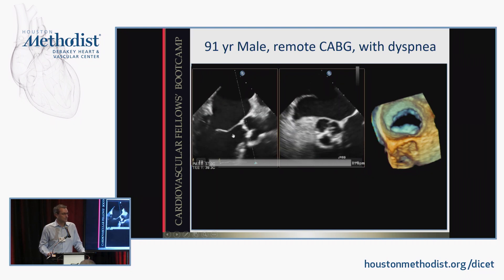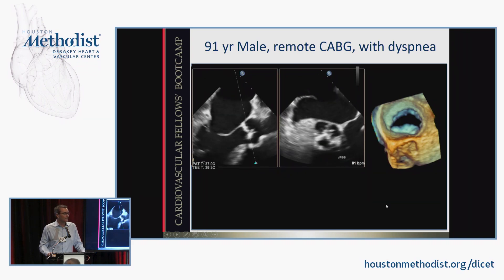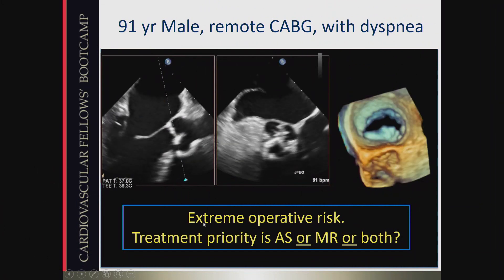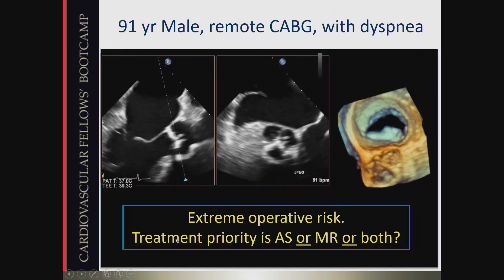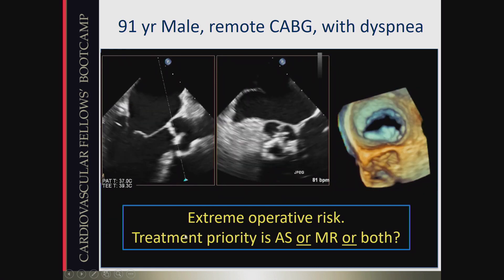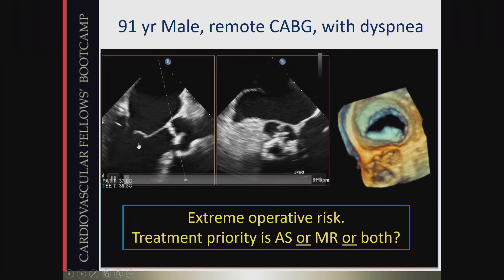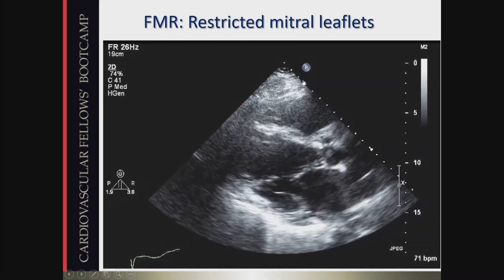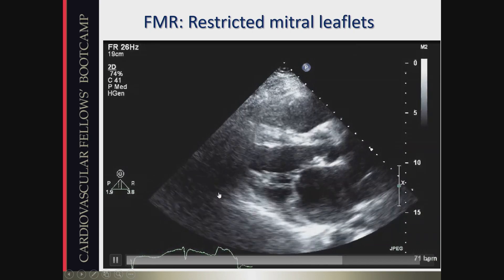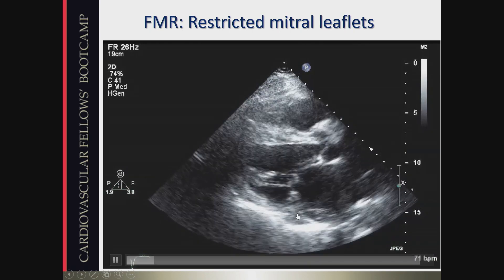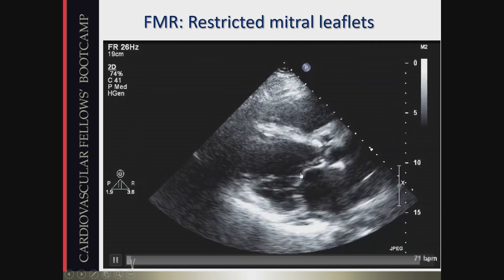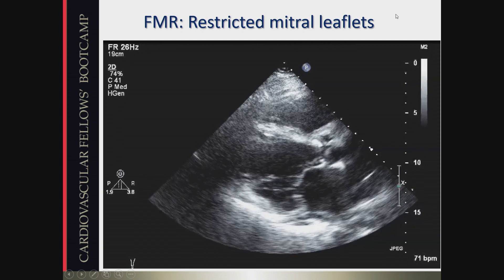An extreme case: a 91-year-old with remote CABG and new-onset dyspnea — the aortic valve doesn't open and the mitral valve doesn't close. He's extreme operative risk, raising real-world challenges: TAVR, MitraClip, or both, and which first. This is a good example of functional MR with the hockey-stick appearance of the anterior leaflet — the cord isn't letting the leaflet lay flat for proper coaptation. On transthoracic echo of another patient, there's visible akinesis of the inferolateral wall, a visible tenting area, and the tenting volume correlates with MR severity.